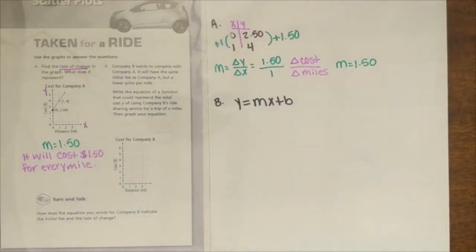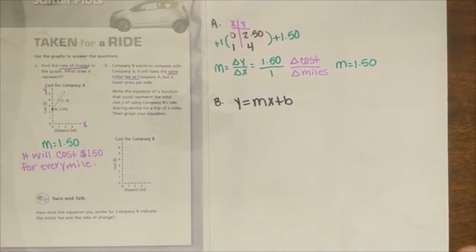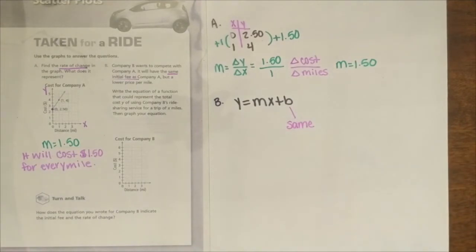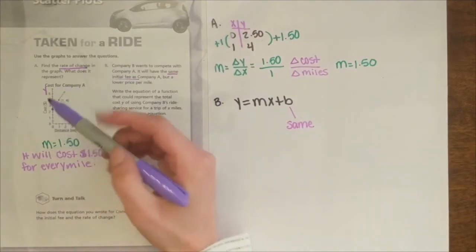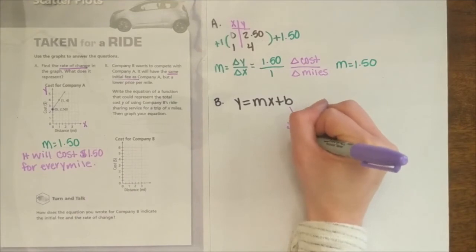Problem B says, Company B wants to compete with Company A. It will have the same initial fee as Company A, but a lower price per mile. Write the equation of the function that could represent the total cost y of using Company B's ride sharing service for a trip of x miles. Then graph your equation. So reading back through, we see that they want our initial fee to be the same. Earlier, we reviewed that your initial fee is your y-intercept, and that its variable is b. So we know that we want this to be the same value for both Company A and Company B. To get this value, we're going to look back to the graph for Company A. We know that the y-intercept is where our line crosses the y-axis, which is at the point 0, 2.50. So the b value for both equations is going to be $2.50.